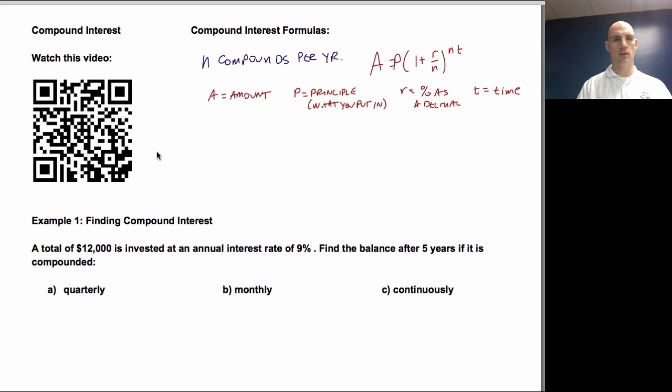Second one is compounded continuously. Compounded continuously. That would mean there's not a certain number, but it's just continuing to be compounded upon itself. And in that case,